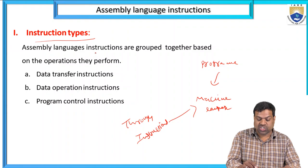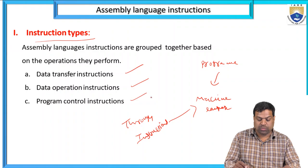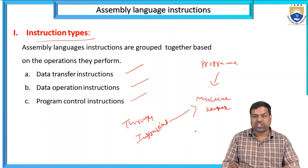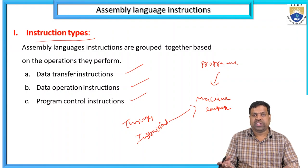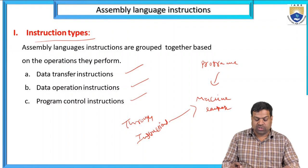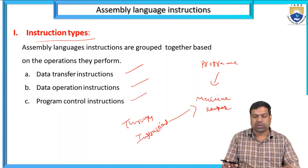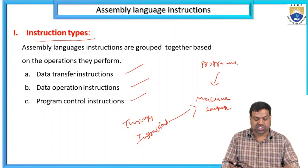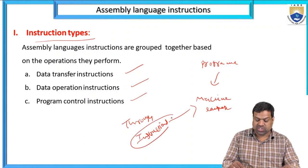How we are giving the instructions: instruction types are grouped together as data transfer, data operation, and program control. Suppose I give an instruction — that instruction is either a data transfer, data operation, or program control. If you want data transfer, you give one type of instruction; for data operation, another type; and for program control, yet another type.